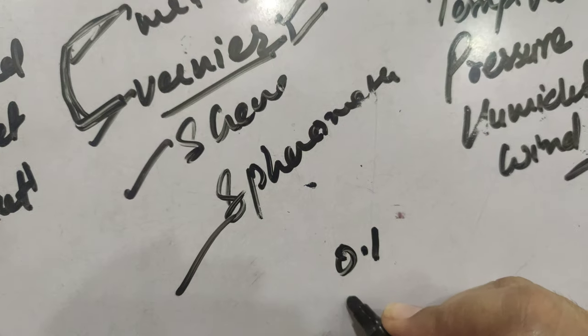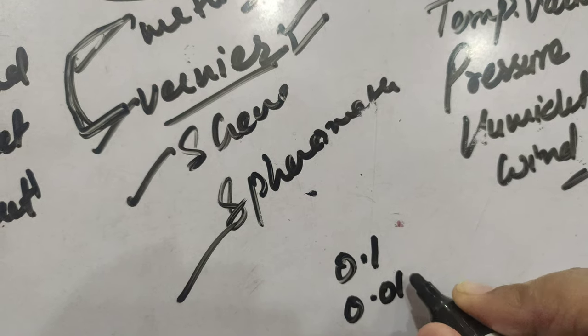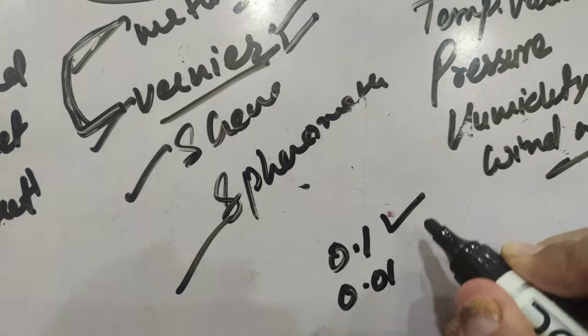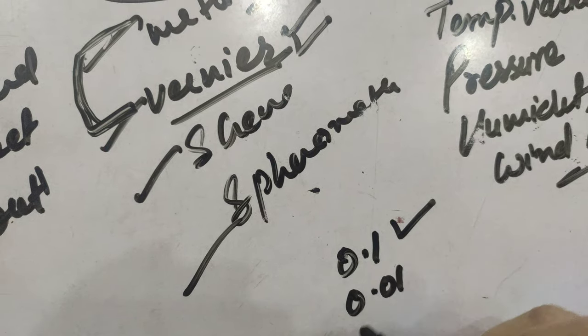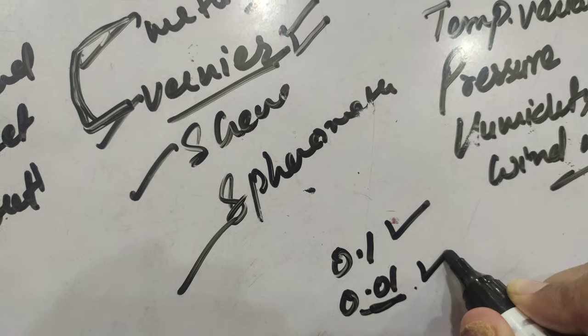While for vernier caliper is 0.01 centimeter. We can see that here, the least count is 0.1 centimeter and for vernier caliper is 0.01 centimeter.